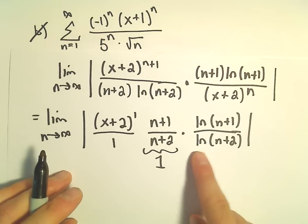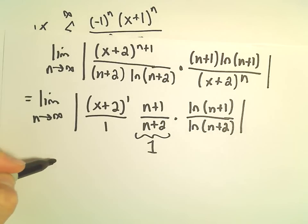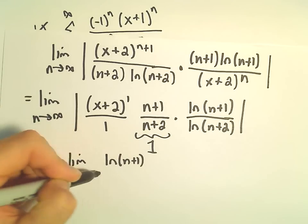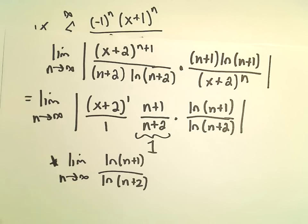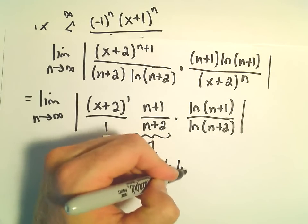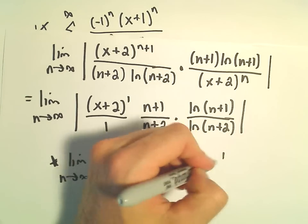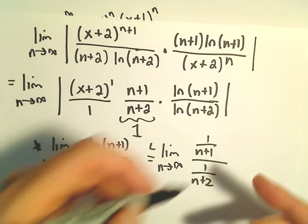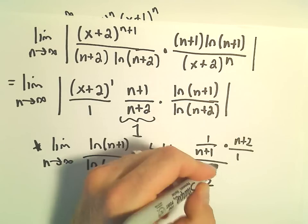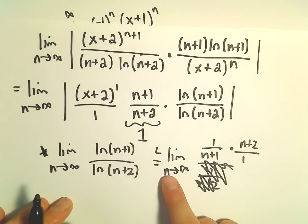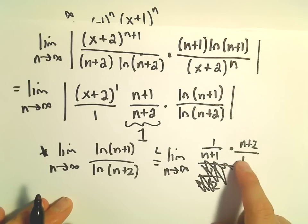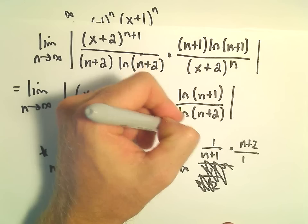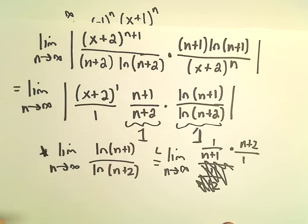The same thing happens with the natural logarithm ratio. If you want, we can use L'Hôpital's rule, because the natural logarithm of n plus 1 over the natural logarithm of n plus 2 gives infinity over infinity. Applying L'Hôpital's rule, we get 1 over (n plus 1) divided by 1 over (n plus 2). Flipping and multiplying, we get the limit as n goes to infinity of (n plus 2) over (n plus 1). The degree of the numerator equals the degree of the denominator, coefficients are both 1, so this limit also equals positive 1.